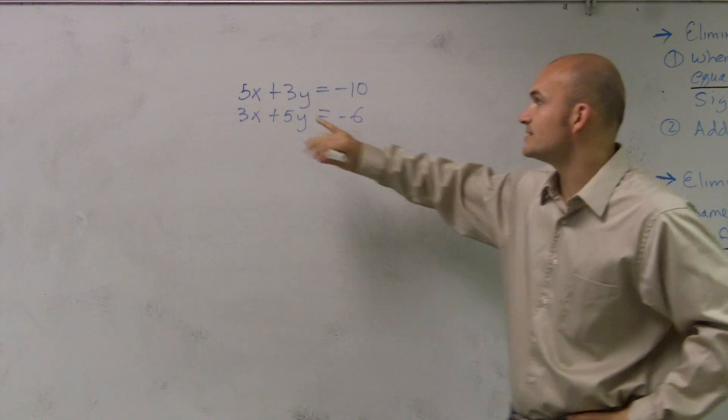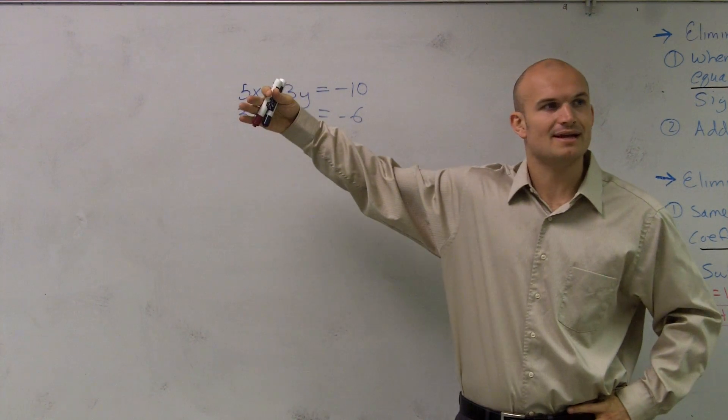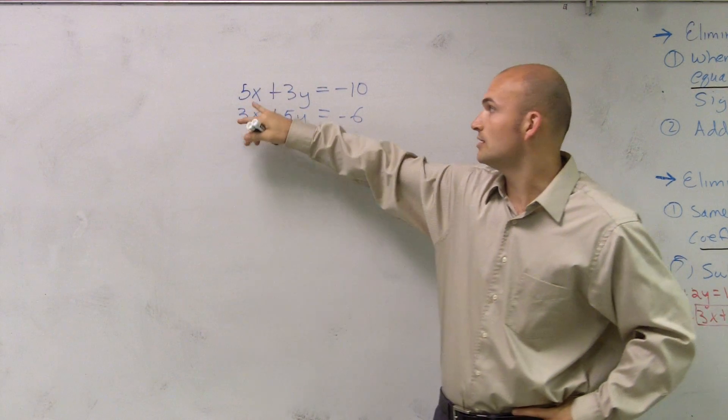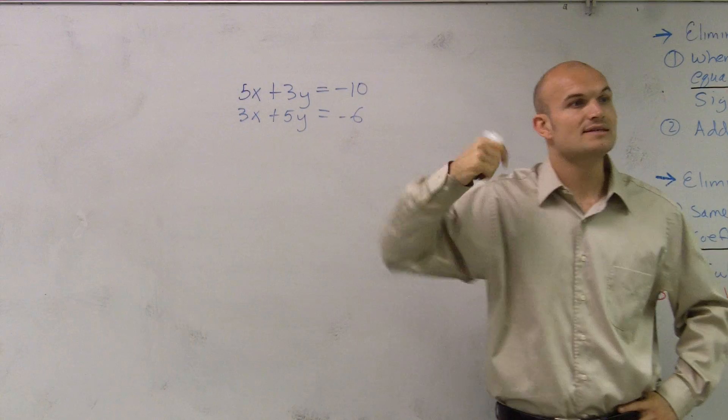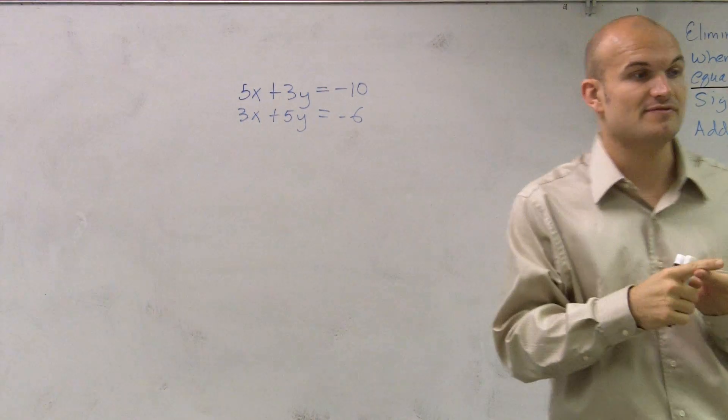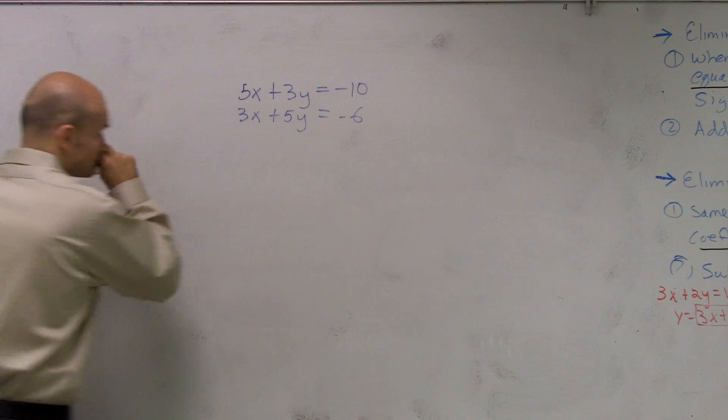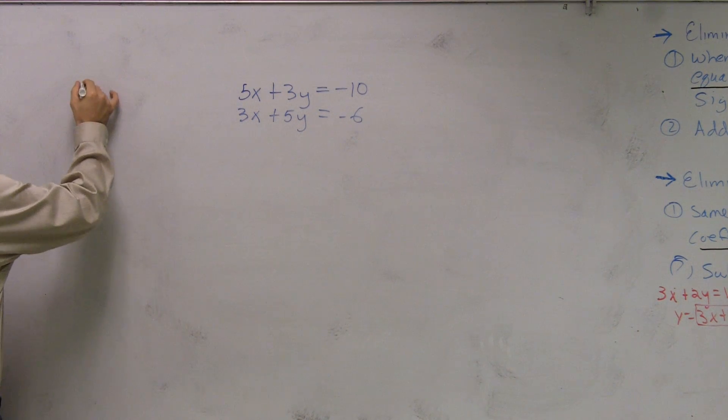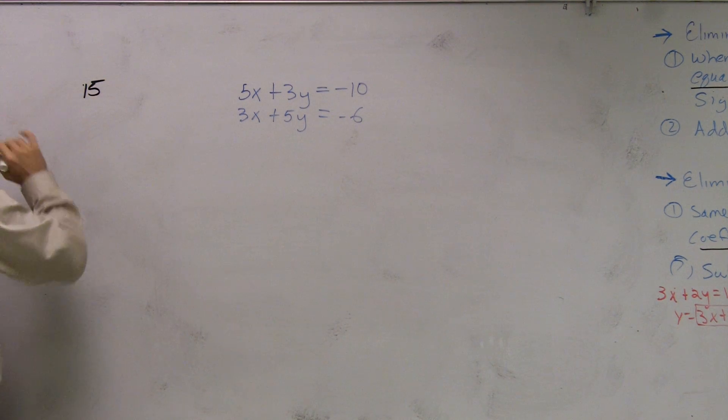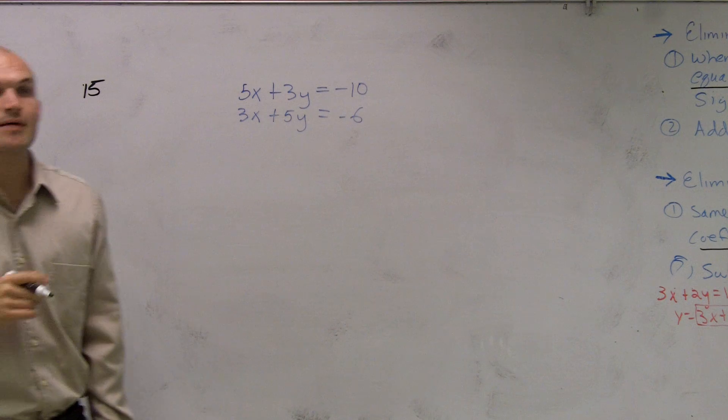So what I'm going to have to do is, usually it's pretty easy to find, I need to find the least common multiple for 5 and 3. Well, the least common multiple for 5 and 3 is going to be 15. 15 is my least common multiple.